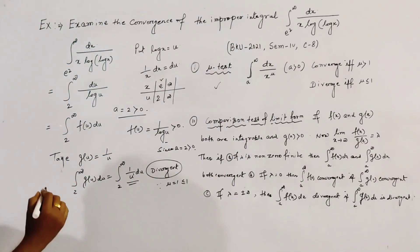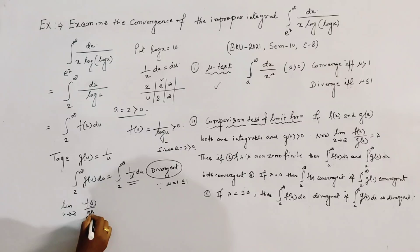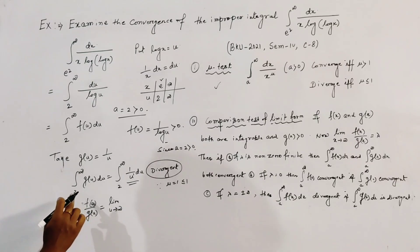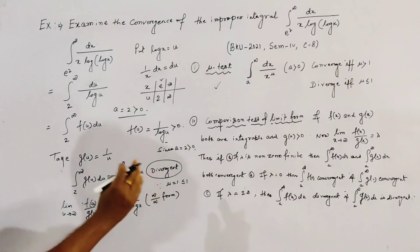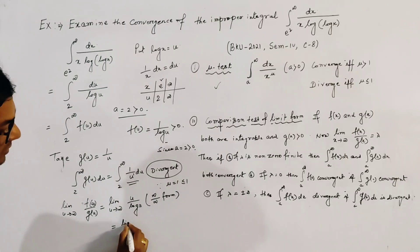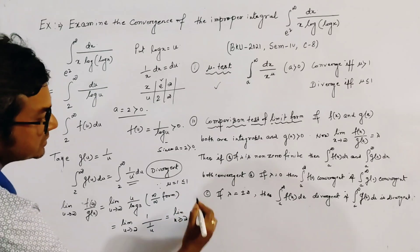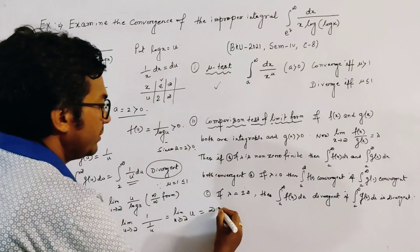Now we compute the limit as u tends to infinity of f(u)/g(u), which gives the limit as u tends to infinity of u over log u. This is of the form infinity over infinity, so we apply L'Hôpital's rule. Differentiating gives the limit as u tends to infinity of 1 divided by (1/u), which equals the limit of u as u tends to infinity. This equals infinity, so λ = infinity.